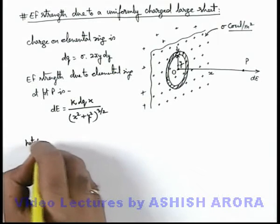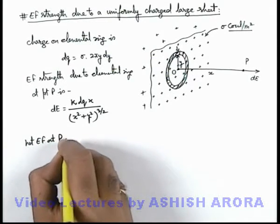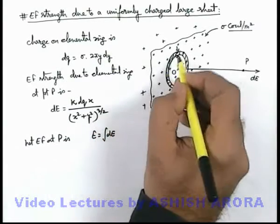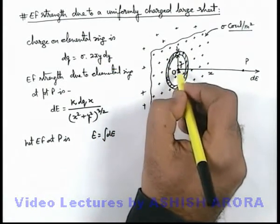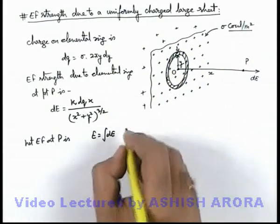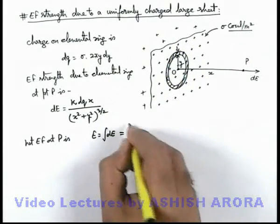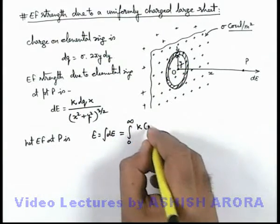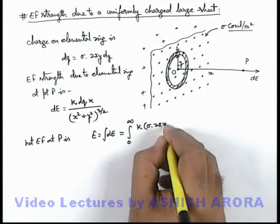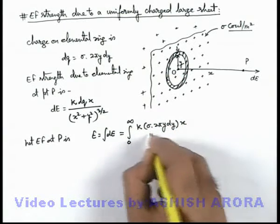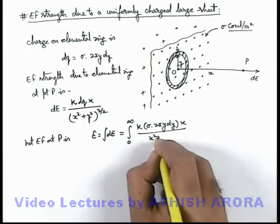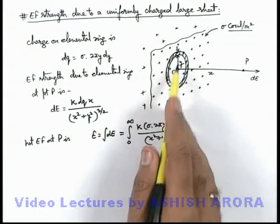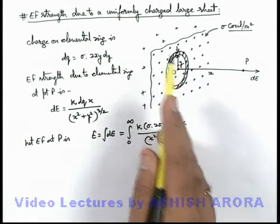The net electric field at P due to the whole sheet can be written as E equals the integration of dE, because we need to integrate these elemental rings from zero to infinity. So it will be integration from zero to infinity. Substituting the value of dE, it is k·dq, which we can write as sigma·2π·y·dy, multiplied by x divided by (x² + y²)^(3/2). Here x is a constant and we are integrating y in limits from zero to infinity.